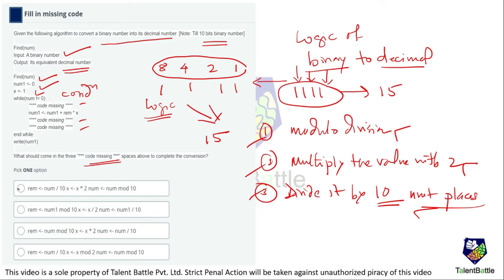The second option takes modulo division but for num1, then passes x divided by 2, then num modulo 10. We need to check that num1 is updated correctly as num1 plus remainder multiplied by x. Some confusion arises about num1 versus num, but the third option satisfies all the steps expected to convert binary to decimal.